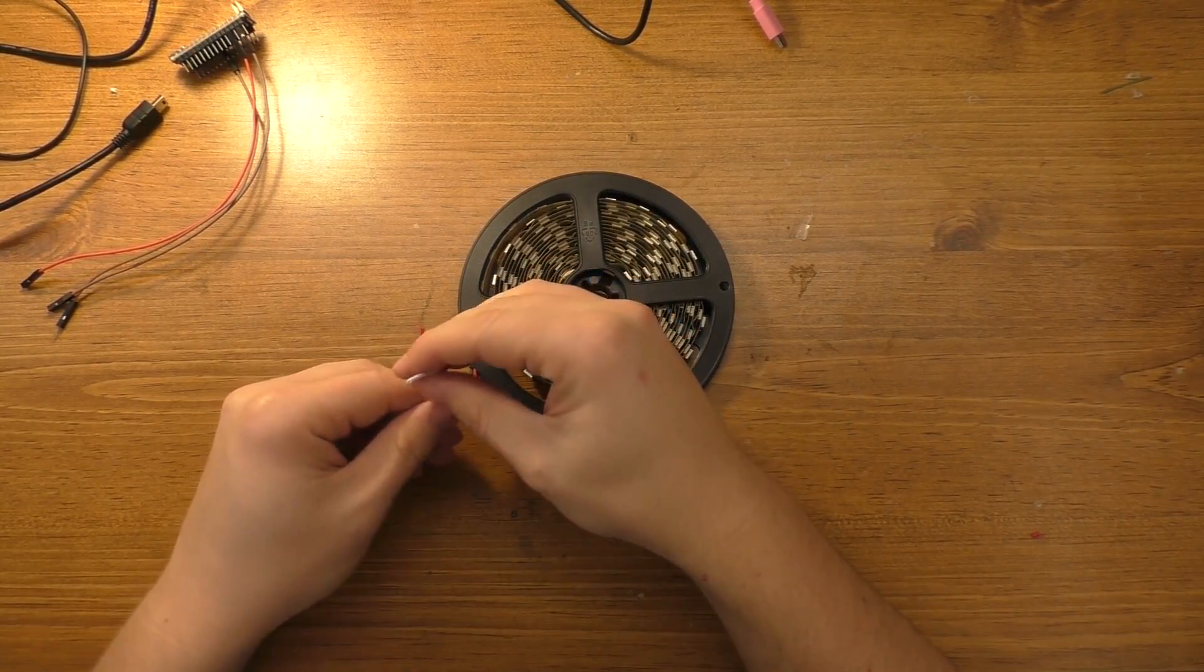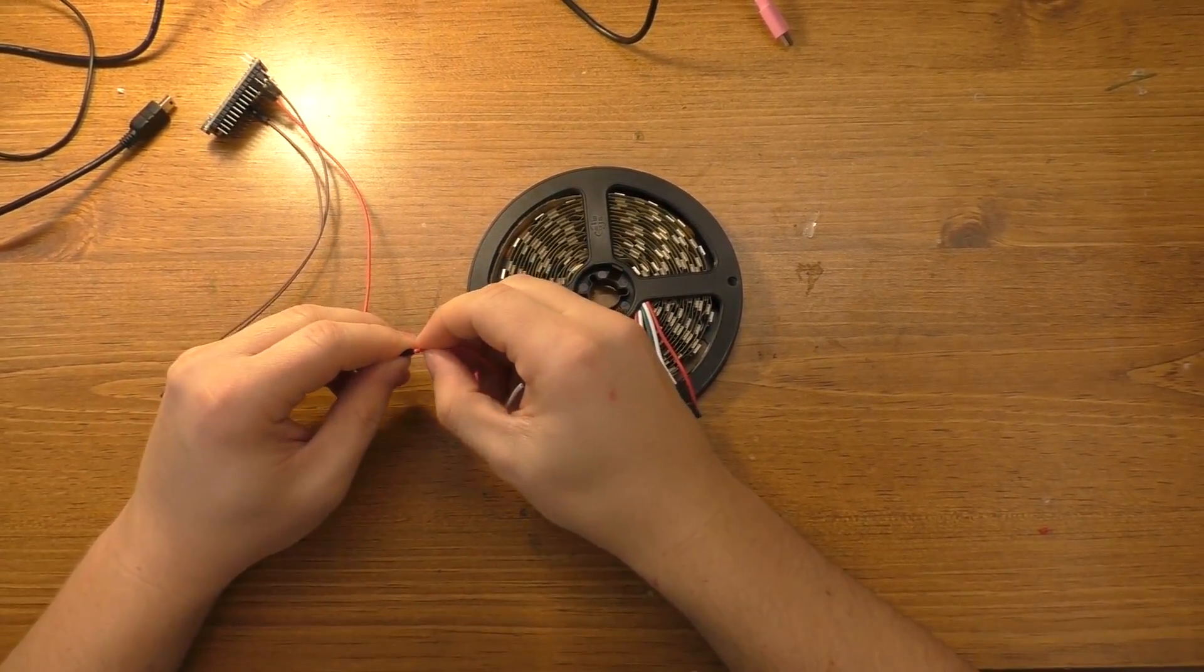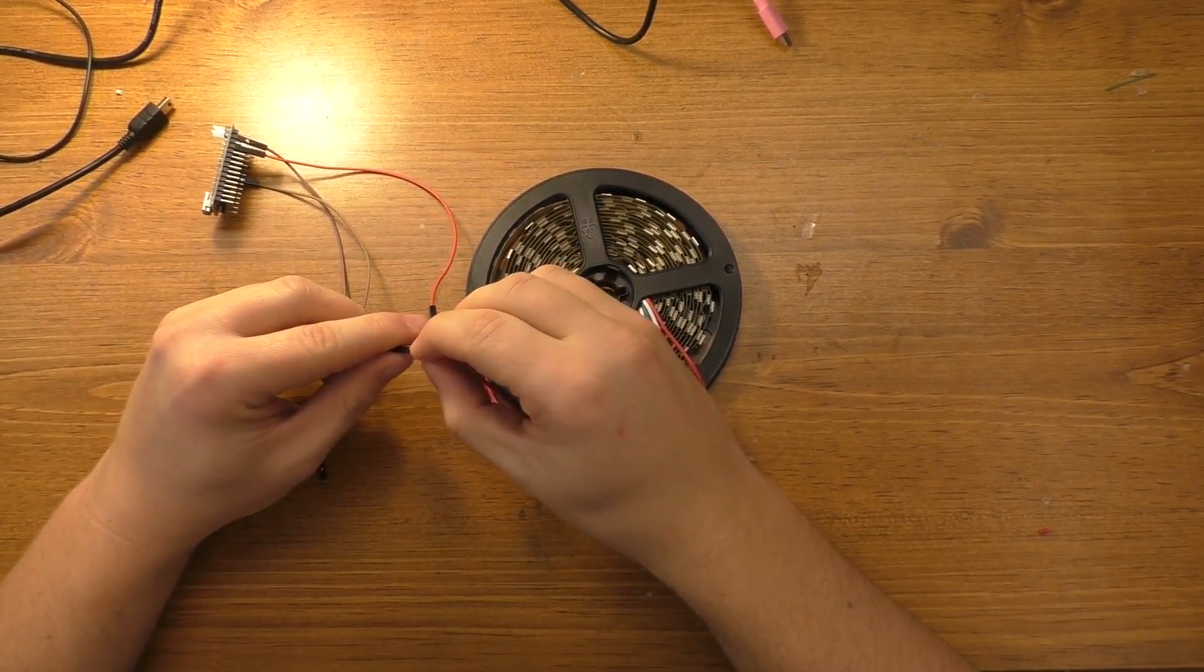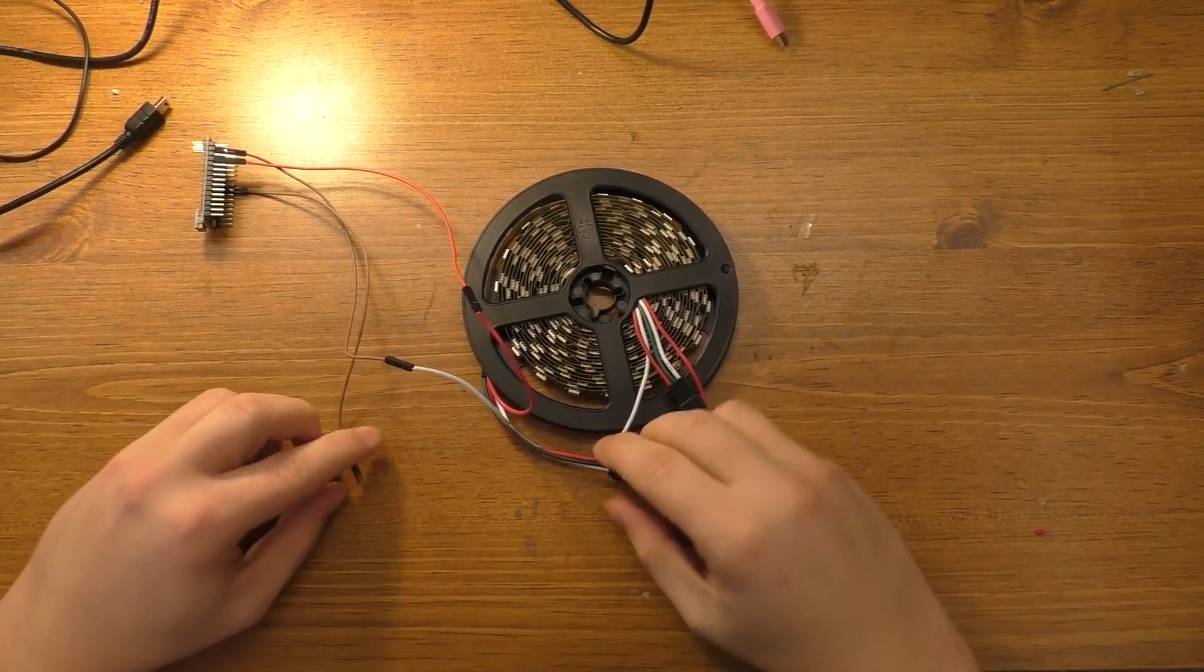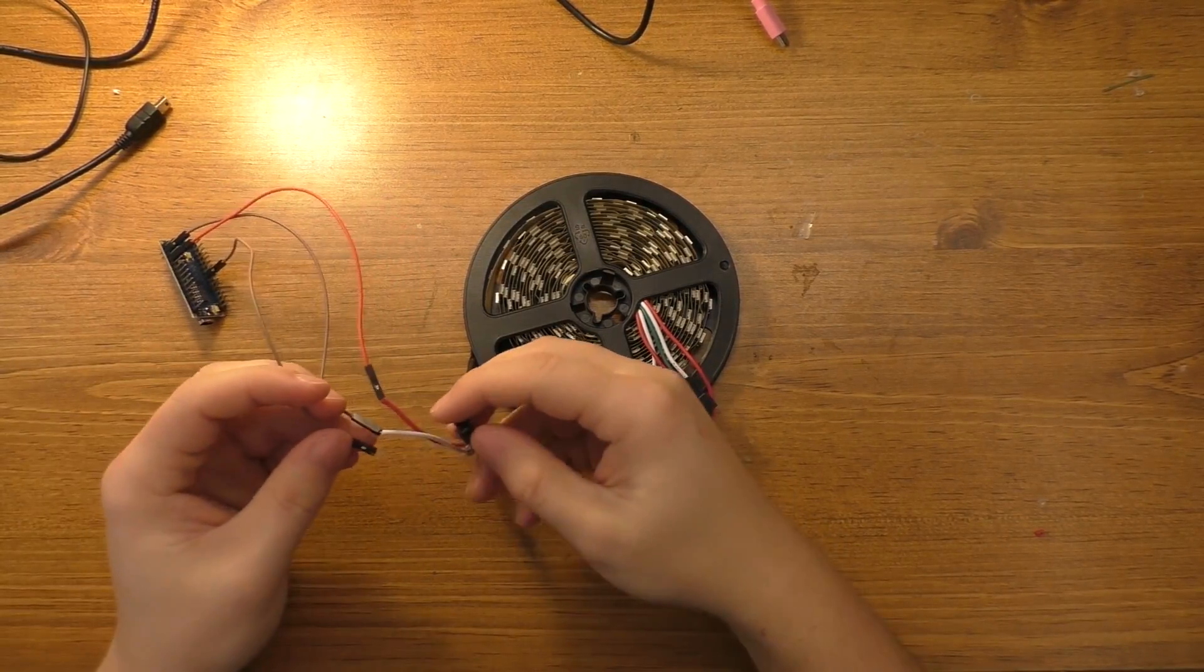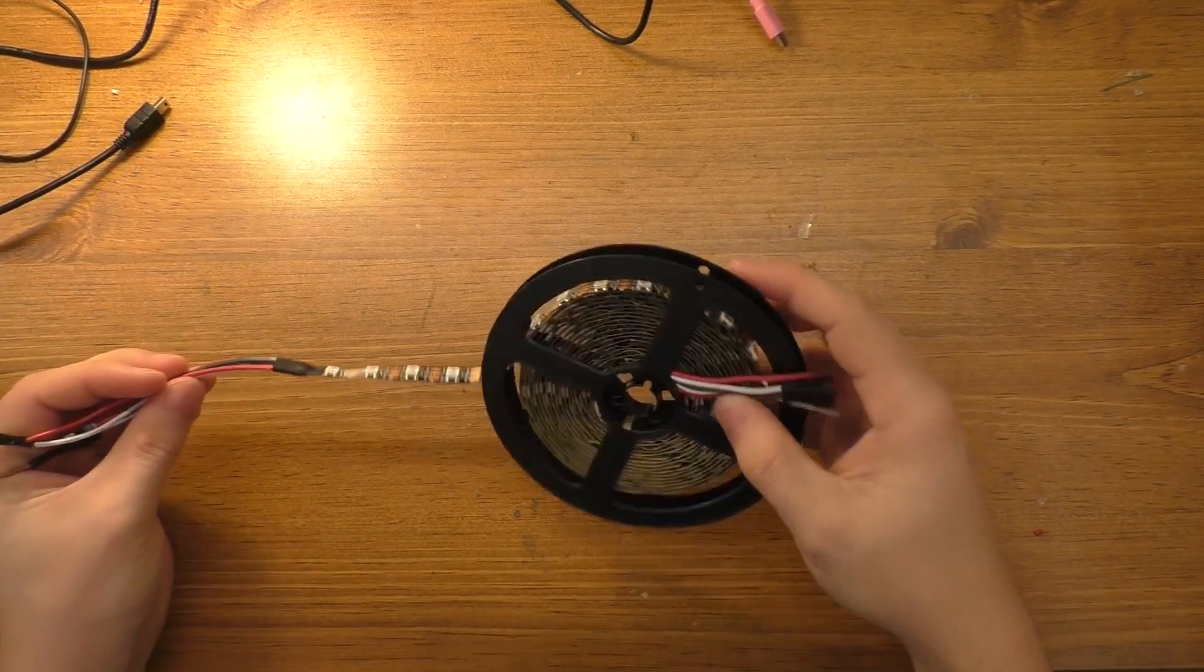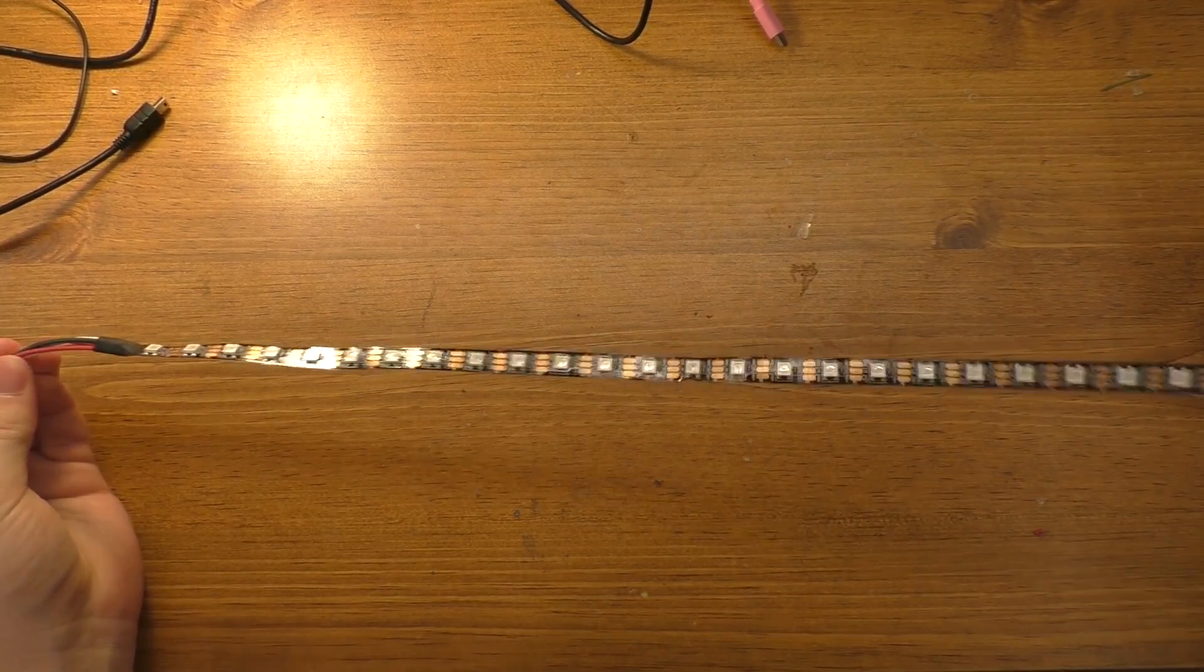I'll go ahead and hook this up. So, red wire goes to positive 5 volts. One of the white wires will go to ground. And the data wire goes to the green, which is the center pin of this particular connector. And I'm just going to kind of stretch this out so you can hopefully see it.